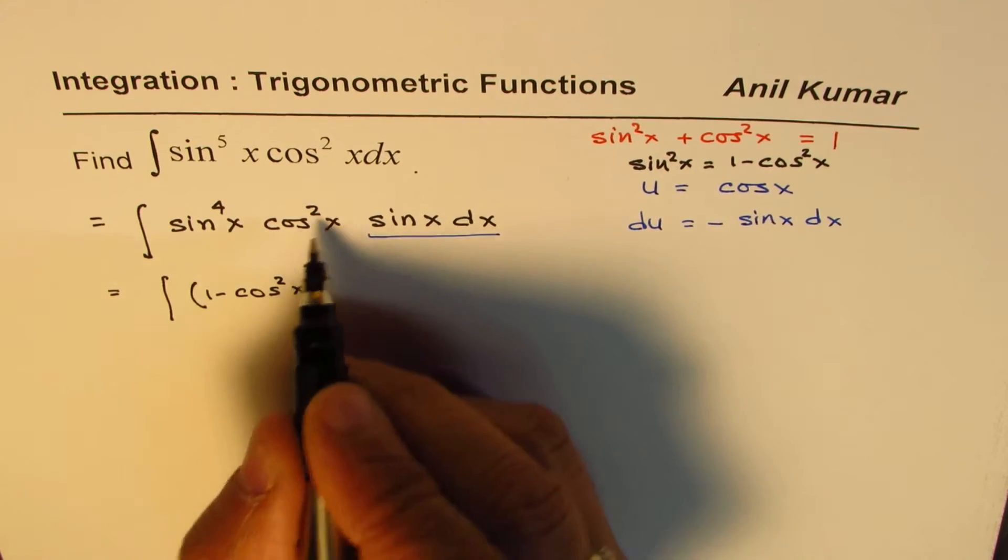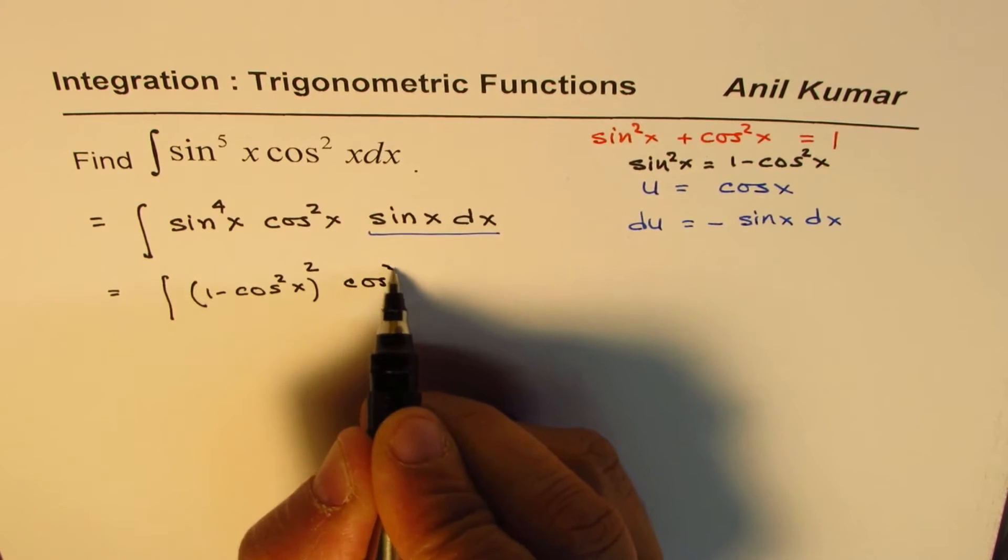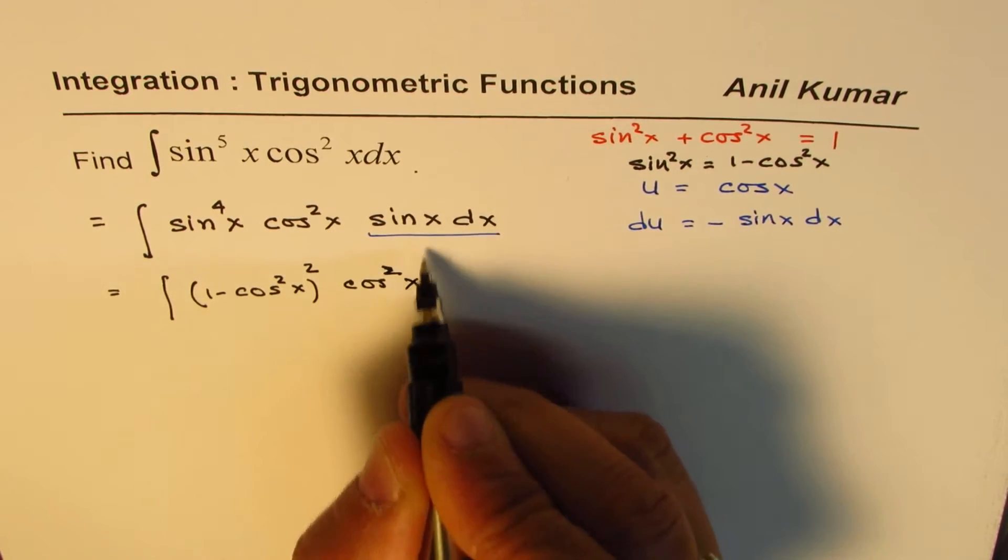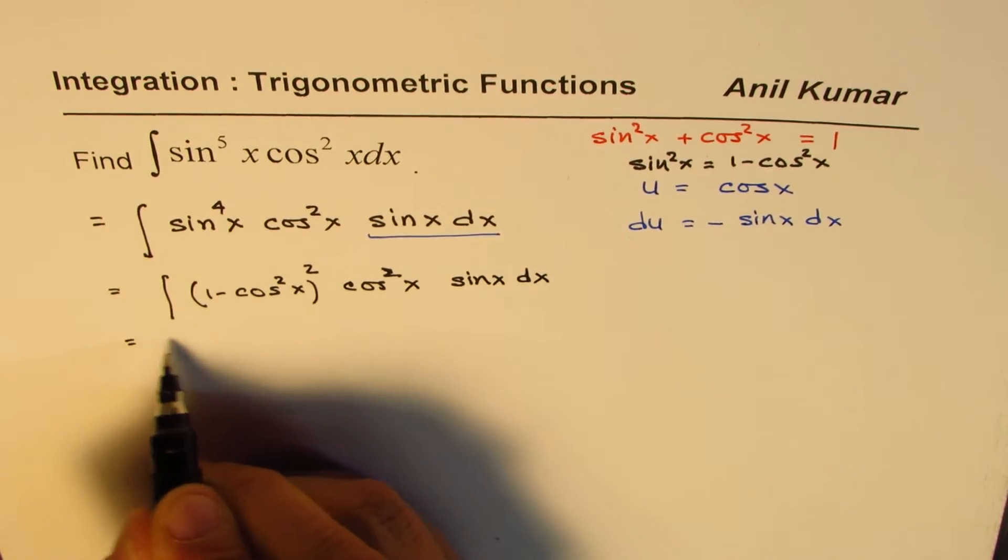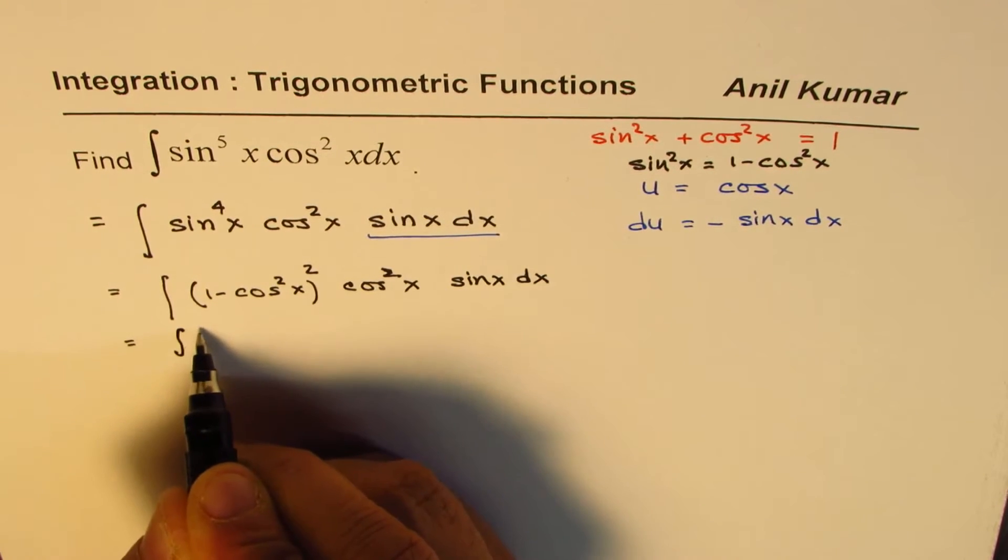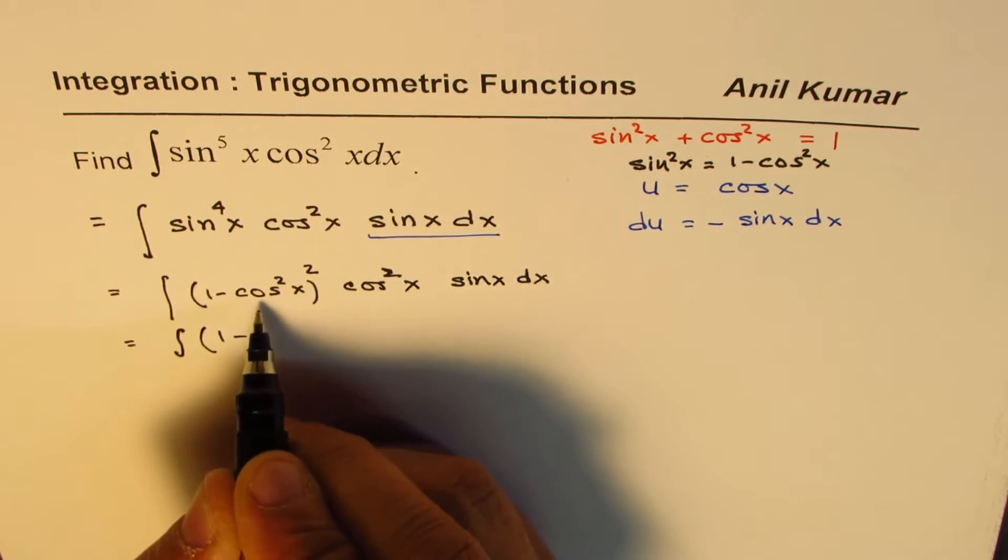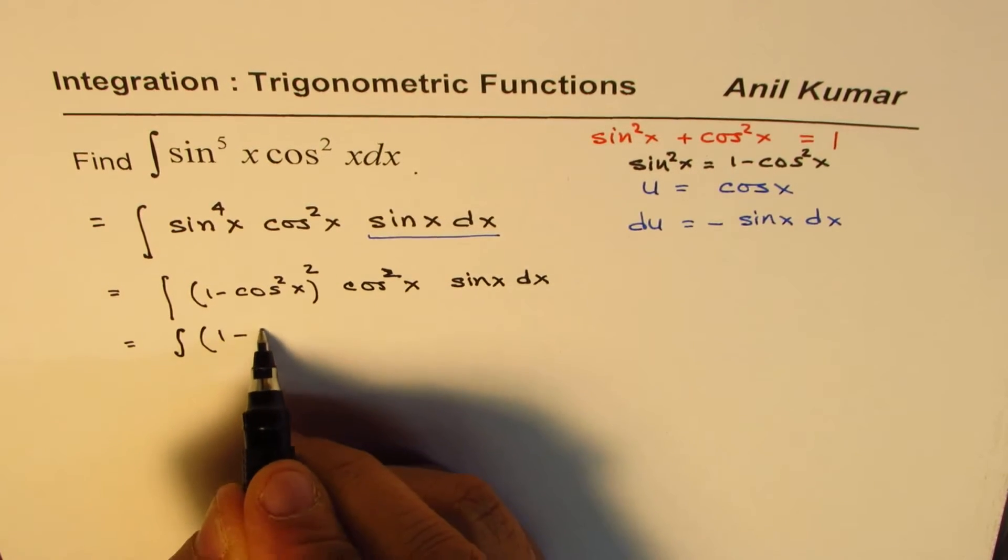That is sine to the power of 4. We already have cos square x here, and this is sine x dx. Now it's time to do the substitution. We can have 1 minus cos square x means u square.